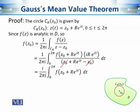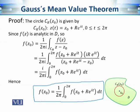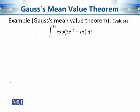Simplifying: z₀ cancels with z₀, and R·e^(it) in the denominator cancels with R·e^(it) from z − z₀, and the iota terms cancel as well. What we are left with is (1/2π) ∫₀^(2π) f(z₀ + R·e^(it)) dt. Hence, f(z₀) equals this expression, which says that the functional value at the center of the circle equals the mean value of the function on that circle.